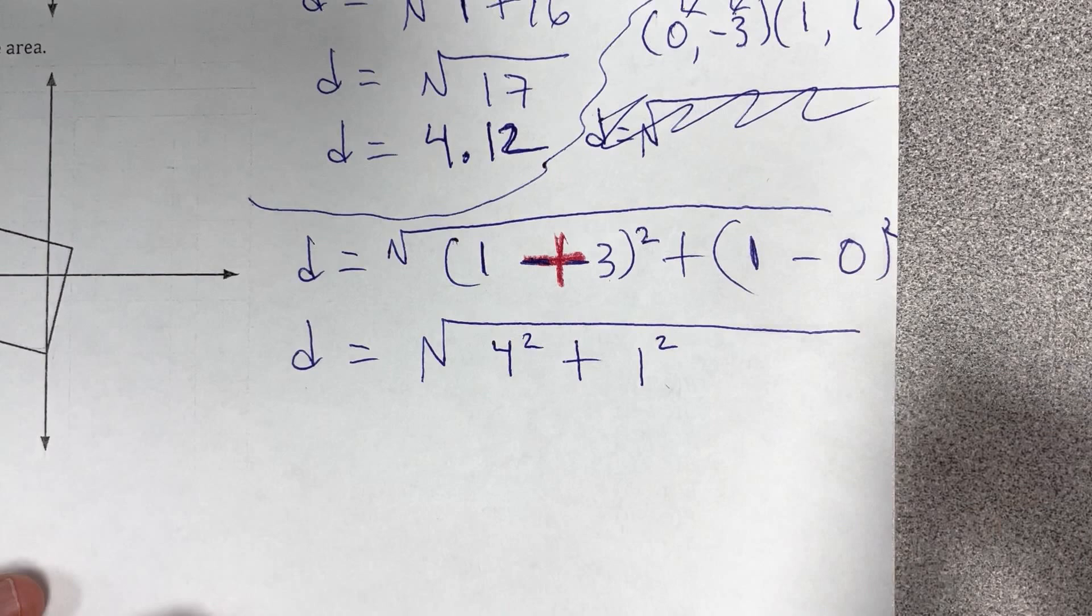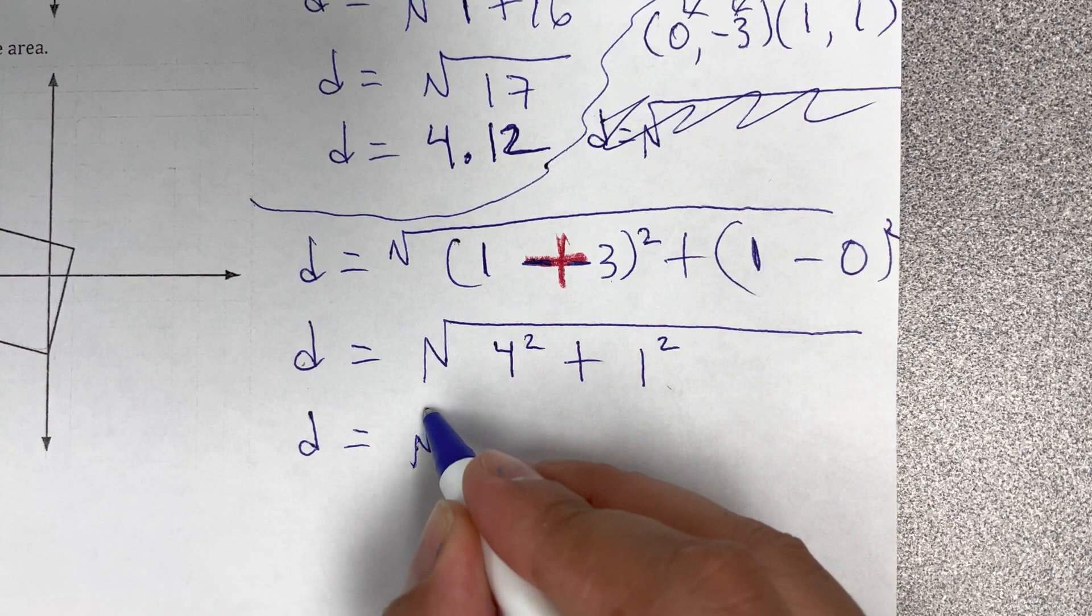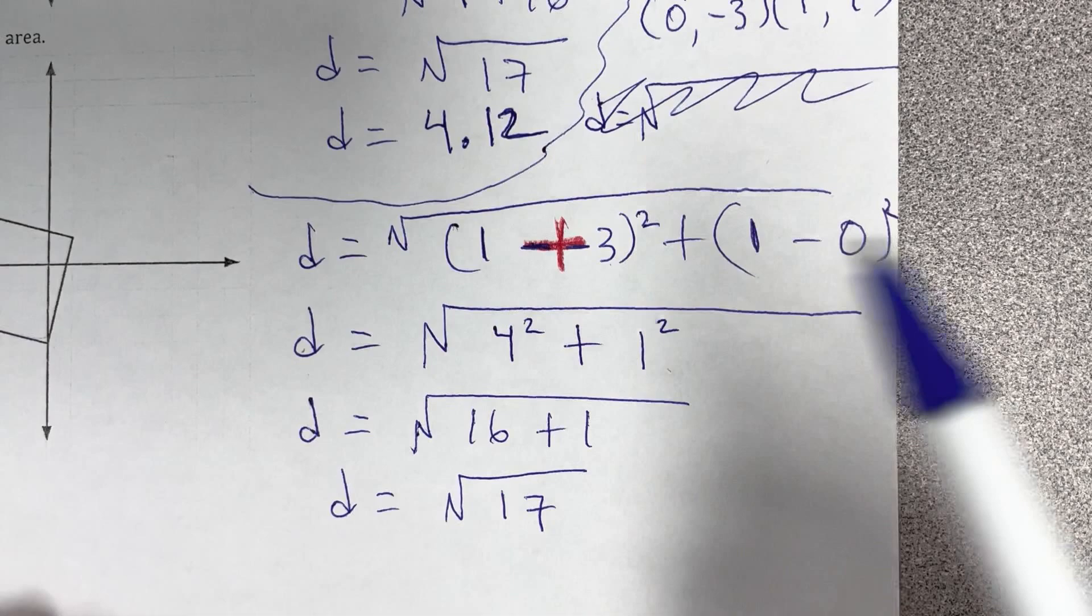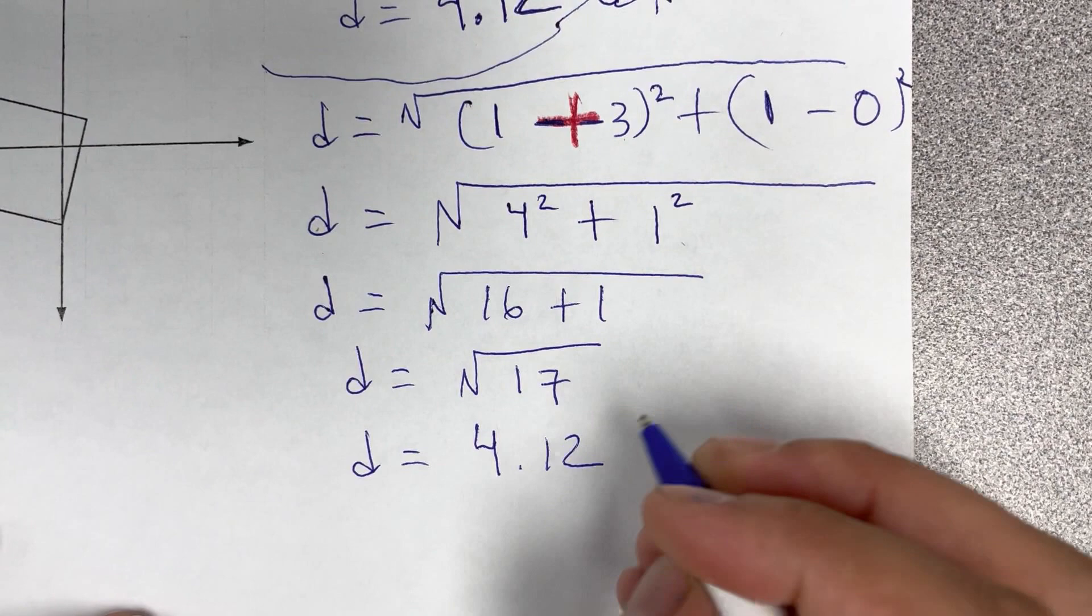And then four square is sixteen. One square is one. And guess what? It's the square root of seventeen, que es lo mismo que tenemos acá. So, that's why I said that it's a square. Es un cuadrado porque tiene los lados iguales.